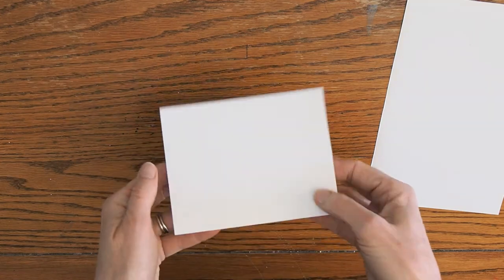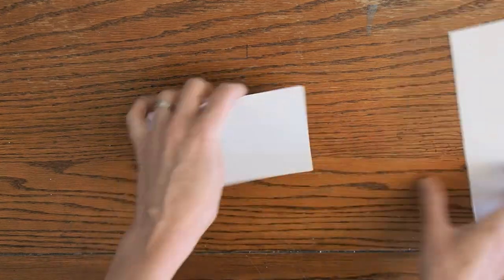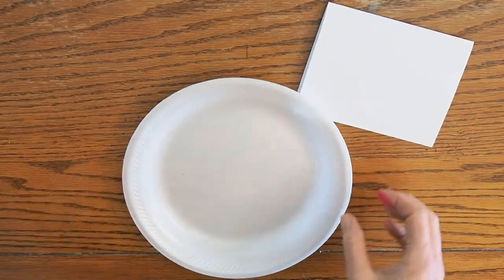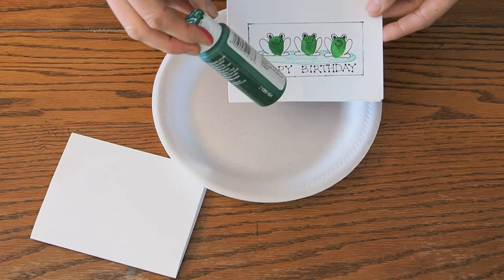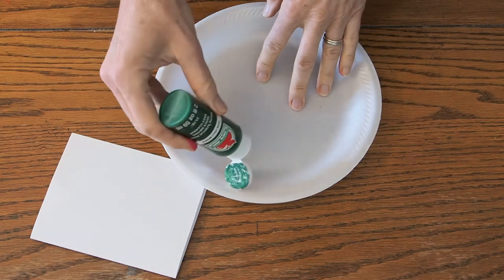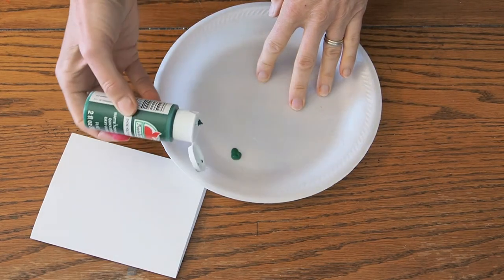Decide whether you want it to open from top to bottom or to the side. We'll get out our plate and our paints. For the froggies we're going to do first today we'll use green. You can make your froggies whatever color you want though. I'm just going to put a little dab of green paint on the plate.